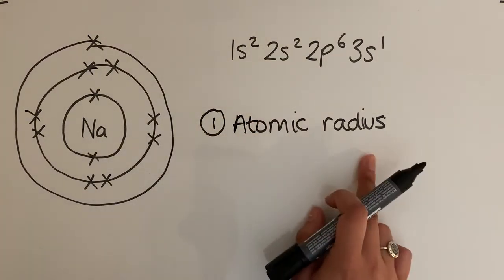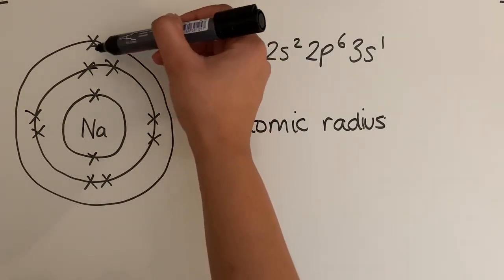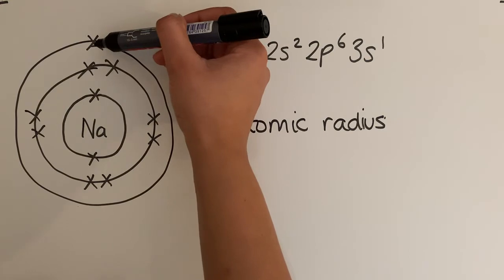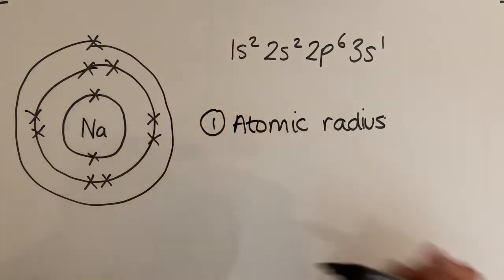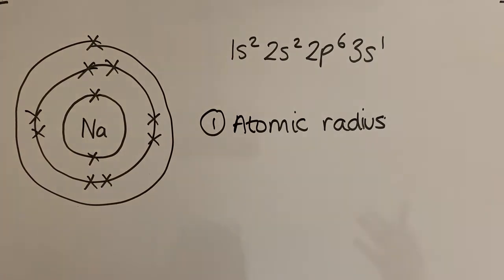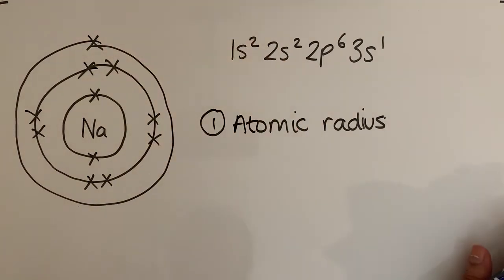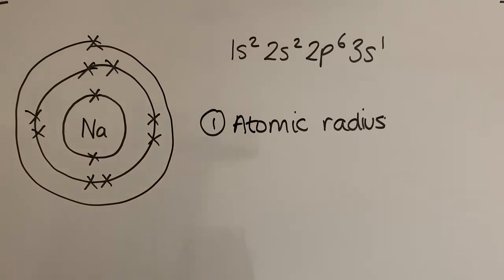Atomic radius is essentially how close that electron is from the nucleus. If the electron is very close to the nucleus, the nuclear attraction will be greater and you will require more energy to remove it. The further that electron is from the nucleus, the less nuclear attraction it will have, and therefore the less energy will be required to remove it.